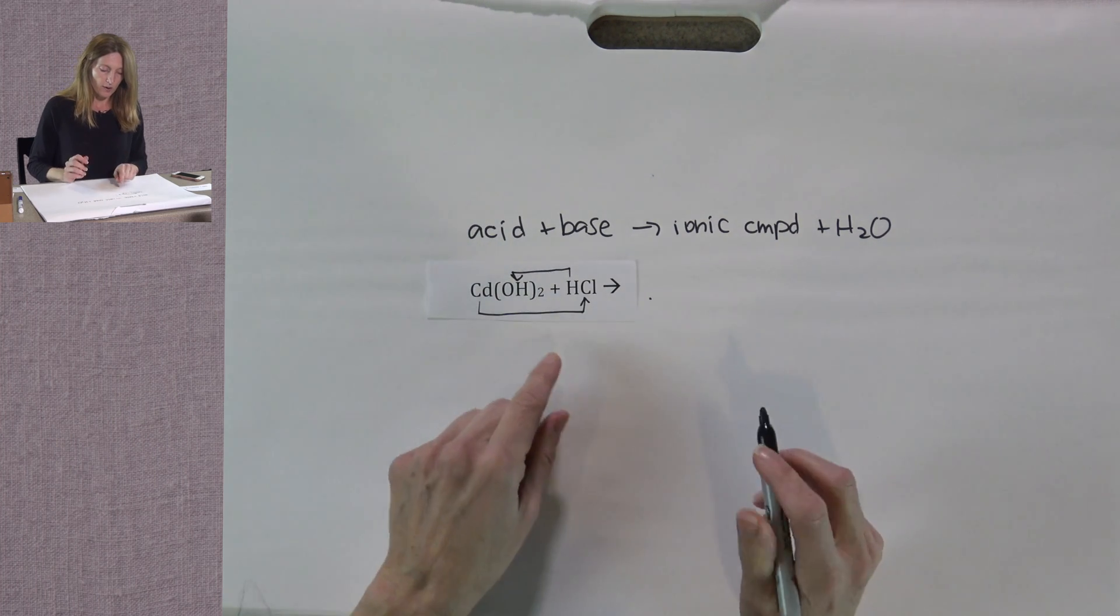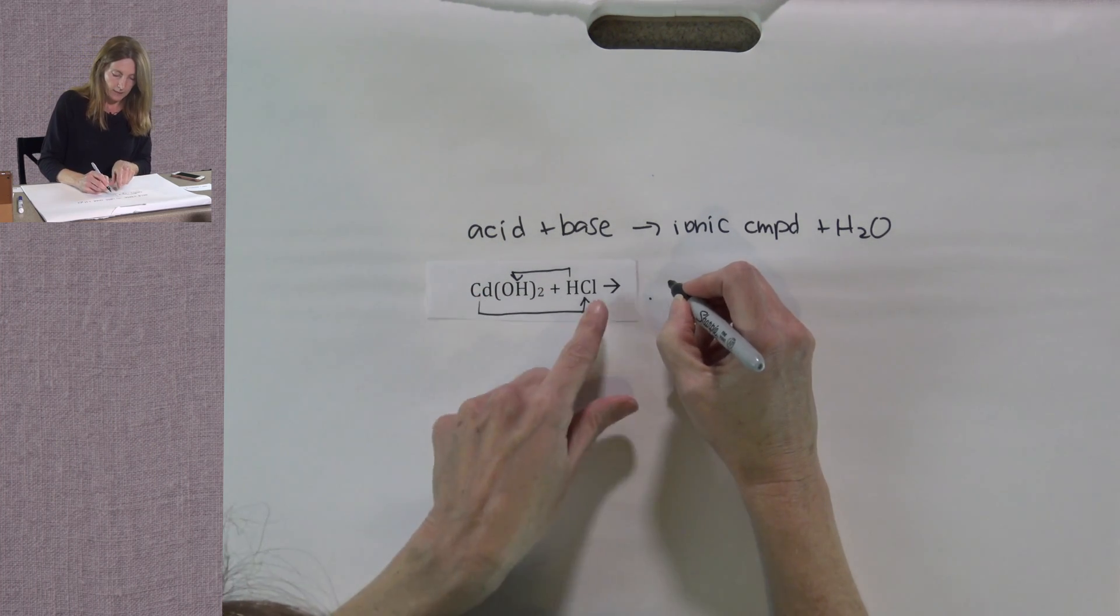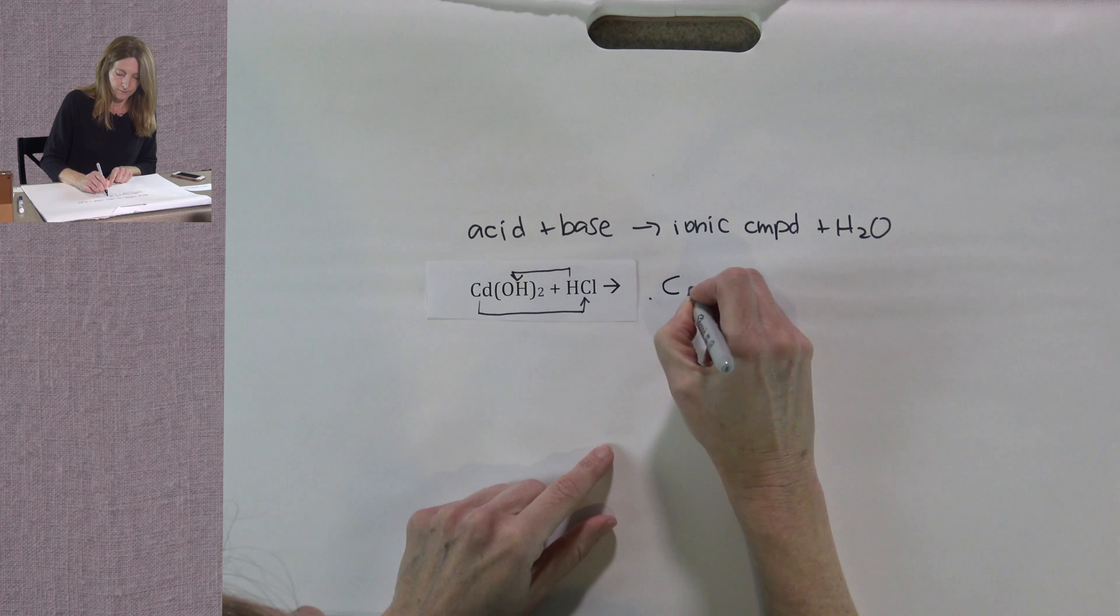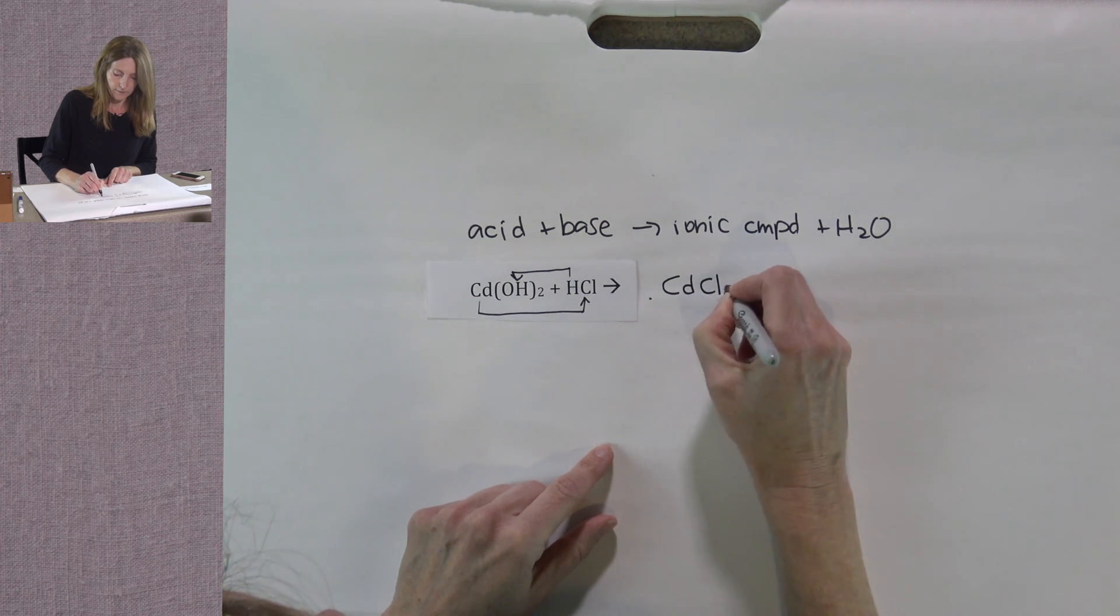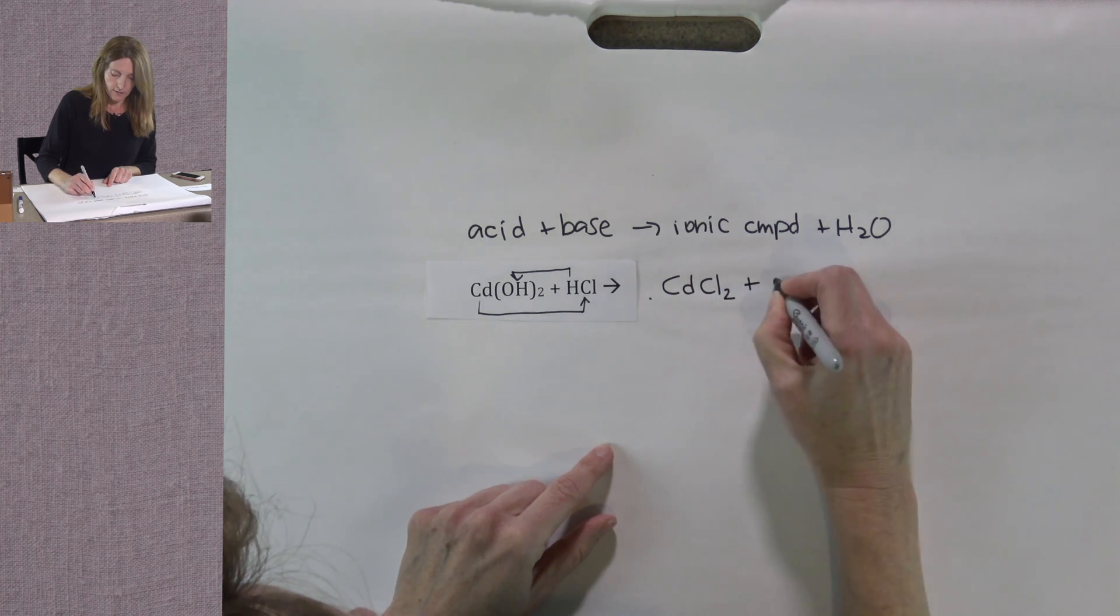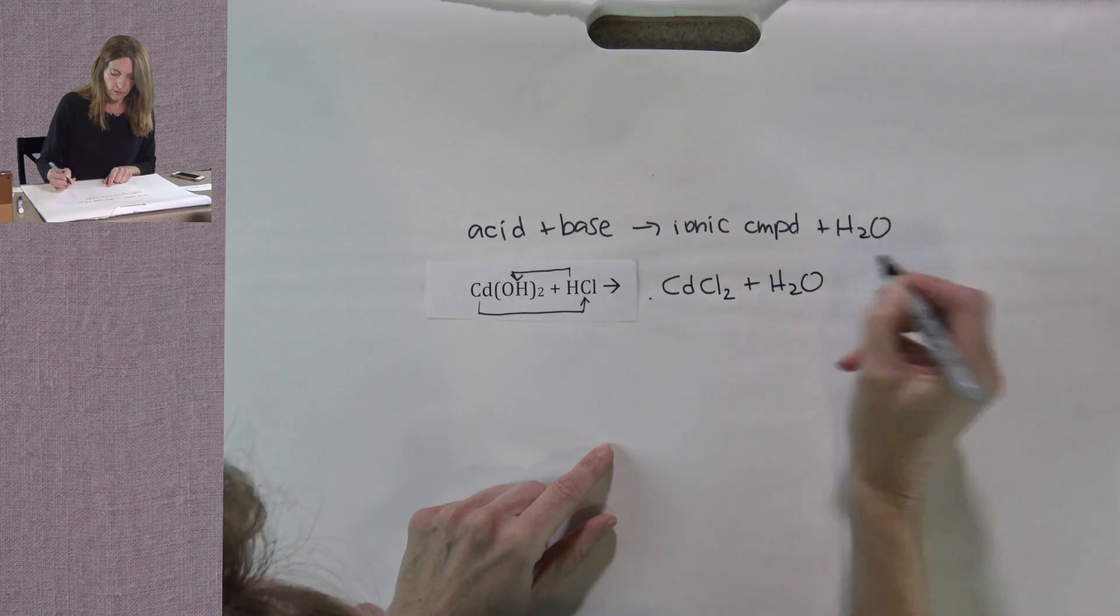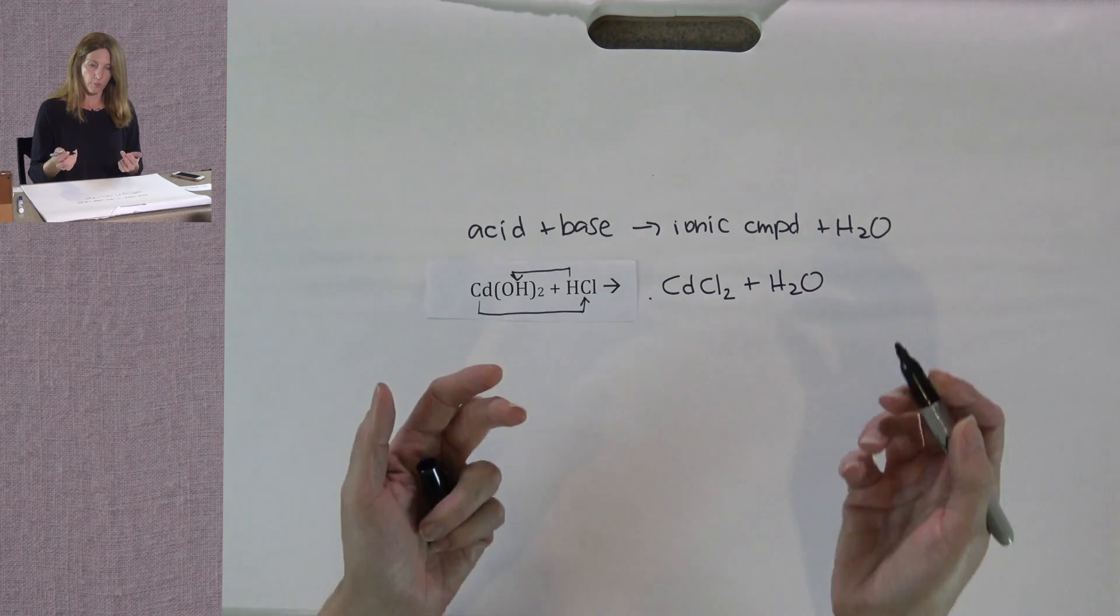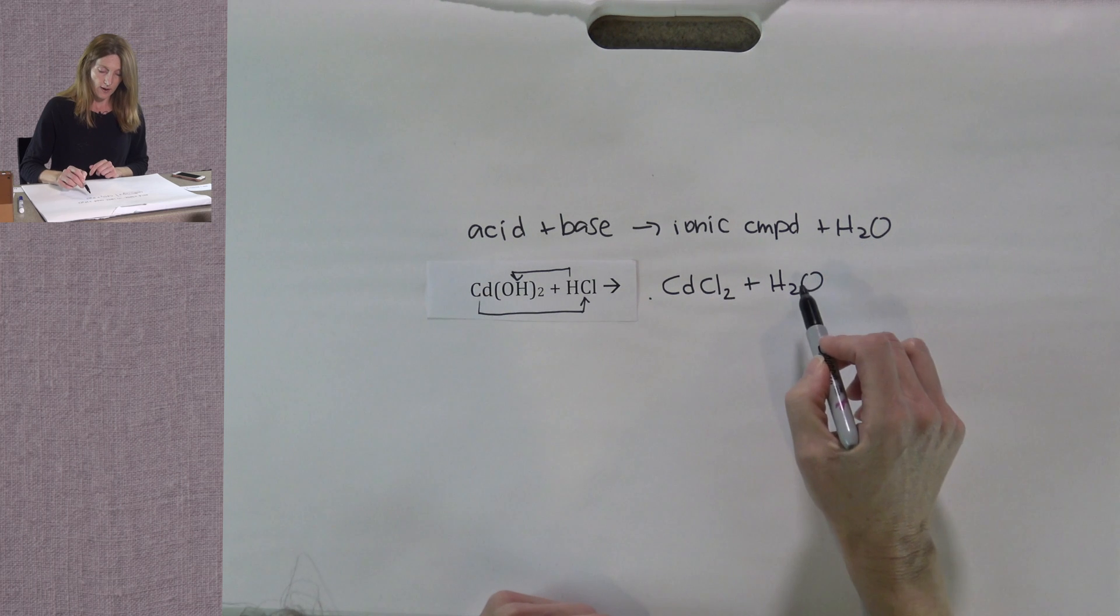So our products will be cadmium chloride and H2O. Again, our products are an ionic compound and water.